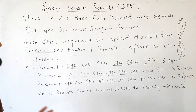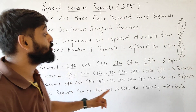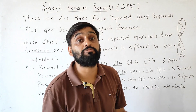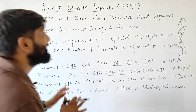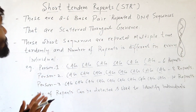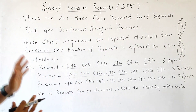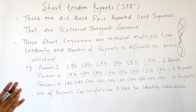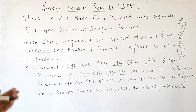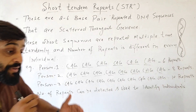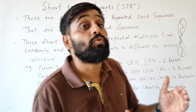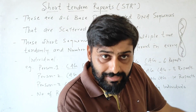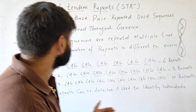The number of repeats can be detected, and this can be used to identify an individual. This is used in DNA fingerprinting. The repetition varies from person to person, making each individual's STR profile unique.